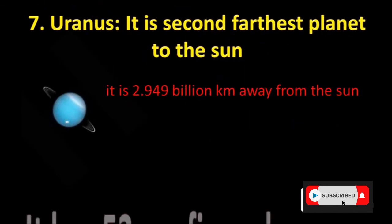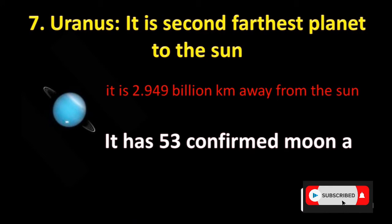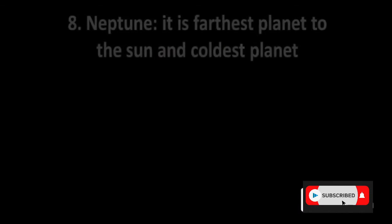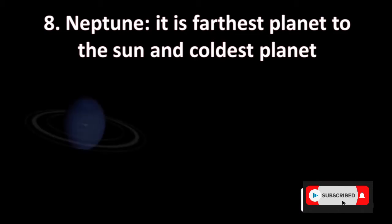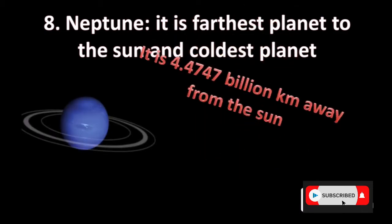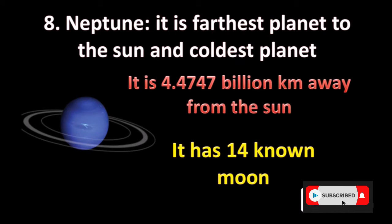Uranus is the second farthest planet from the sun, about 2.949 billion kilometers away, and has 53 confirmed moons. Neptune is the farthest and coldest planet from the sun. It is 4.4747 billion kilometers away and has 14 known moons.